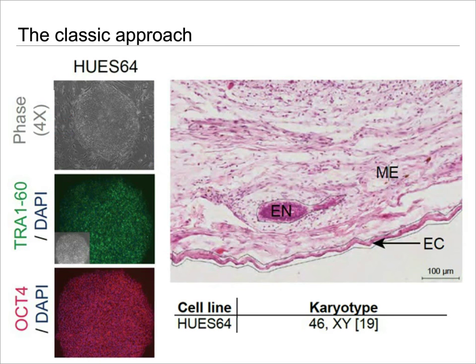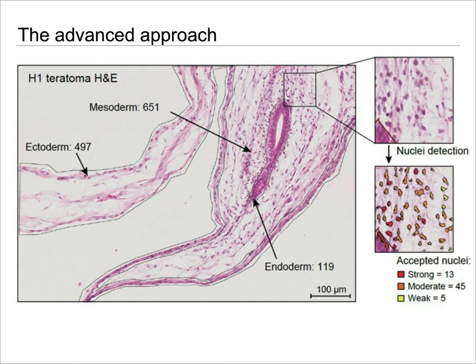The classic assay would be, for instance, the teratoma assay, as shown on the right here in this one cell line. It stays positive for most of the stem cell markers, forms a teratoma, and has a normal karyotype. However, the typical representation is not very quantitative. So we wanted to see if we can make this more powerful by more comprehensively counting the contributions of the germ layers in the teratoma.